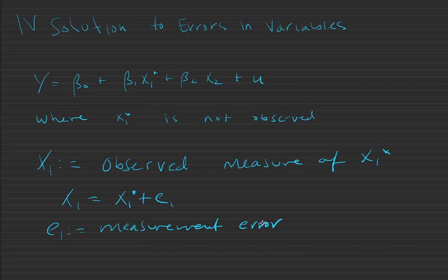If x1 and e1 are correlated, so the covariance between x1 and e1 is not equal to zero, and we use x1 in place of x1 star, then OLS is biased and inconsistent.